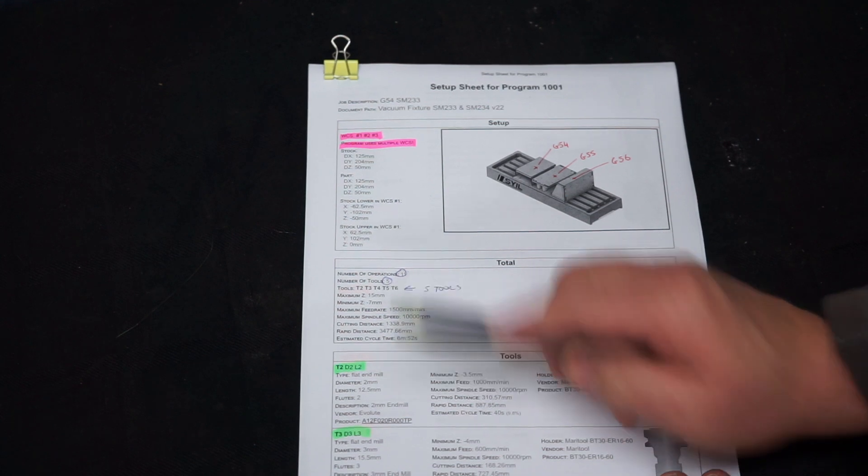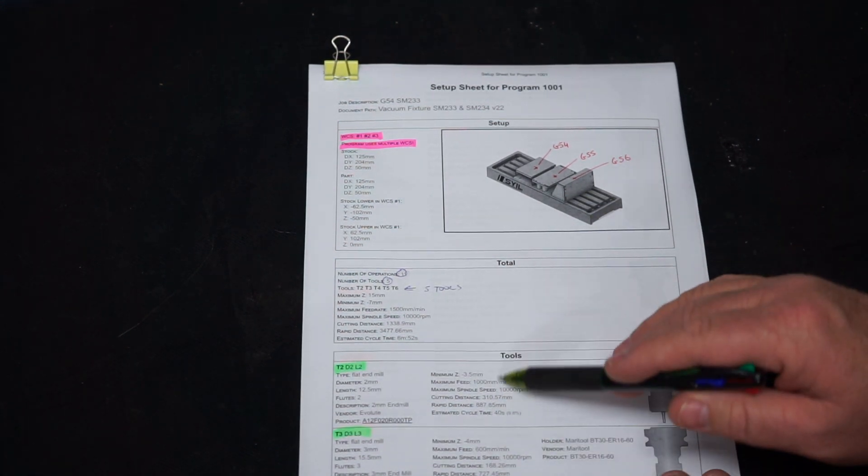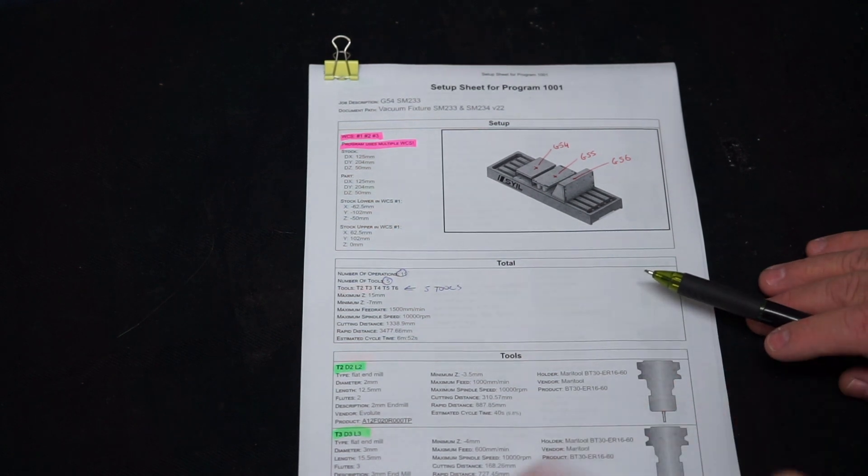and then it outlines what the tools are, what I need to set up in my holders. So obviously tool two will be a flat end mill of two mill diameter,